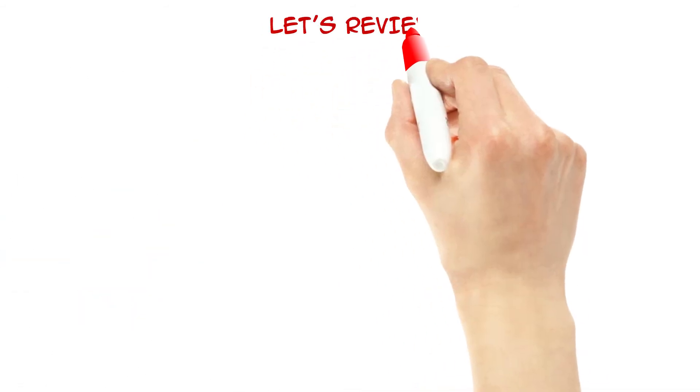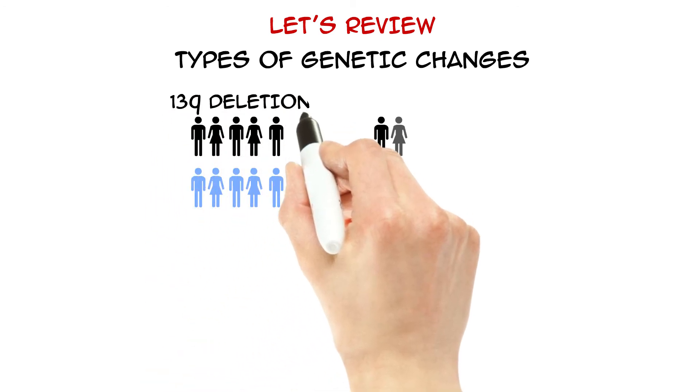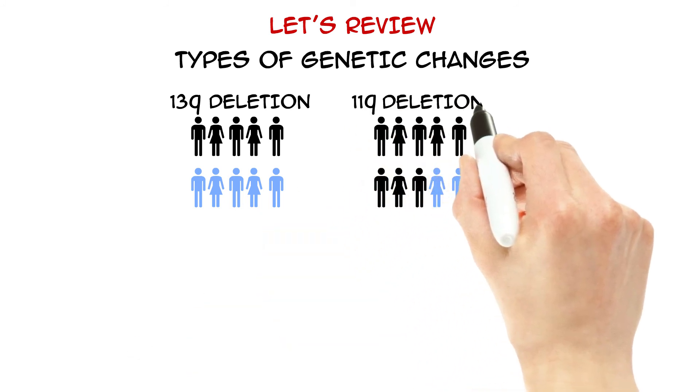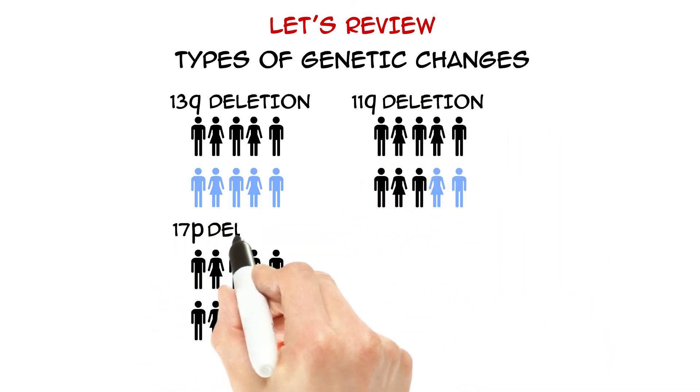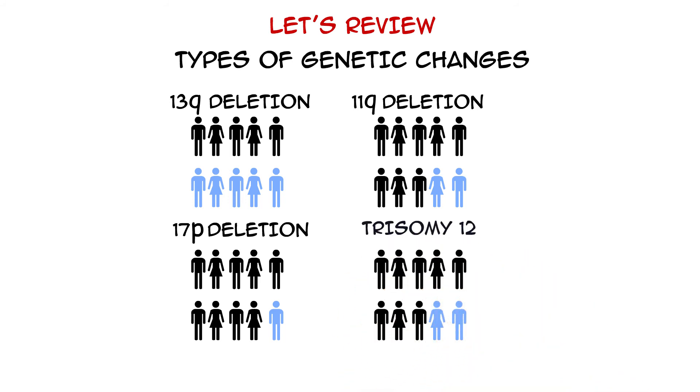As that was a lot of information, let's quickly summarize. Some of the different genetic changes that can occur in people with CLL include 13q deletion, 11q deletion, 17p deletion, trisomy 12, and IGHV changes, which can be mutated or unmutated.